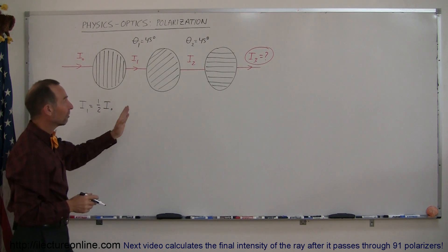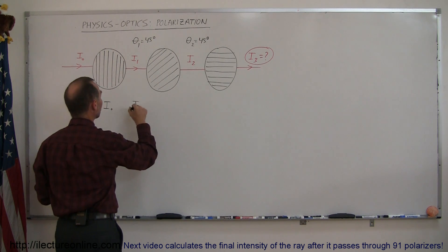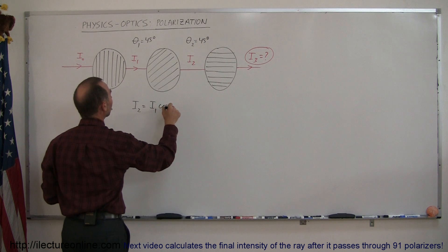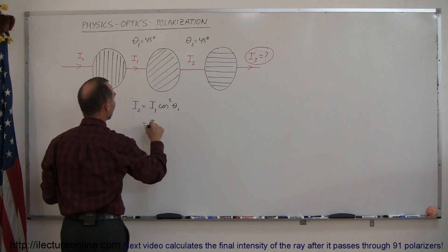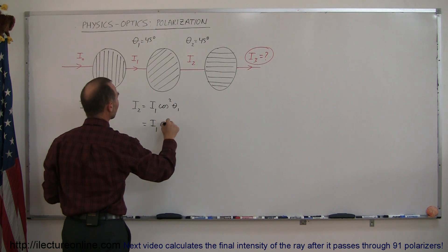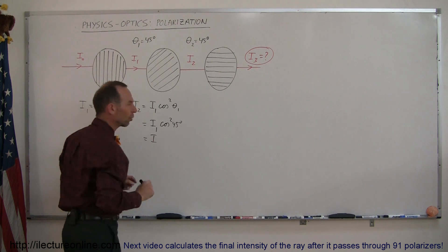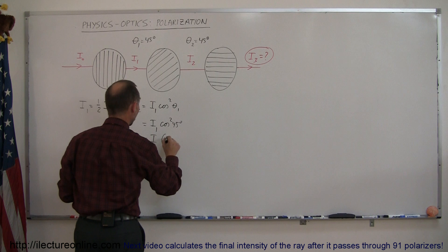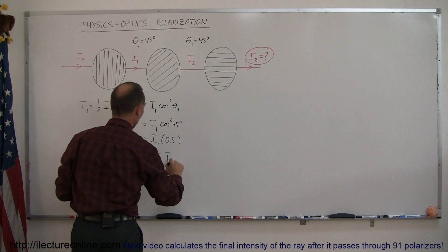Now let's look at what the intensity would be when we get through the second polarizer. Here we can say that I₂ is equal to I₁ times the cosine of θ₁ squared. In this case, that is I₁ times the cosine squared of 45 degrees, and that's equal to I₁ times—the cosine of 45 degrees is 0.707, and we square that—that's equal to 0.5.